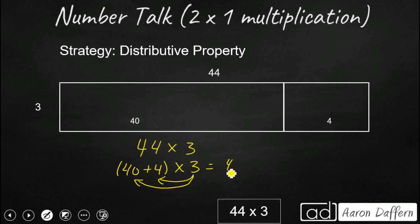Then we take our 3 and distribute it and multiply it by both addends there. So we've got 40 times 3, that's 120, and we add that to our 4 times 3, that's 12. I bet most of you probably used this method to solve it. Add those two together and you get 132.